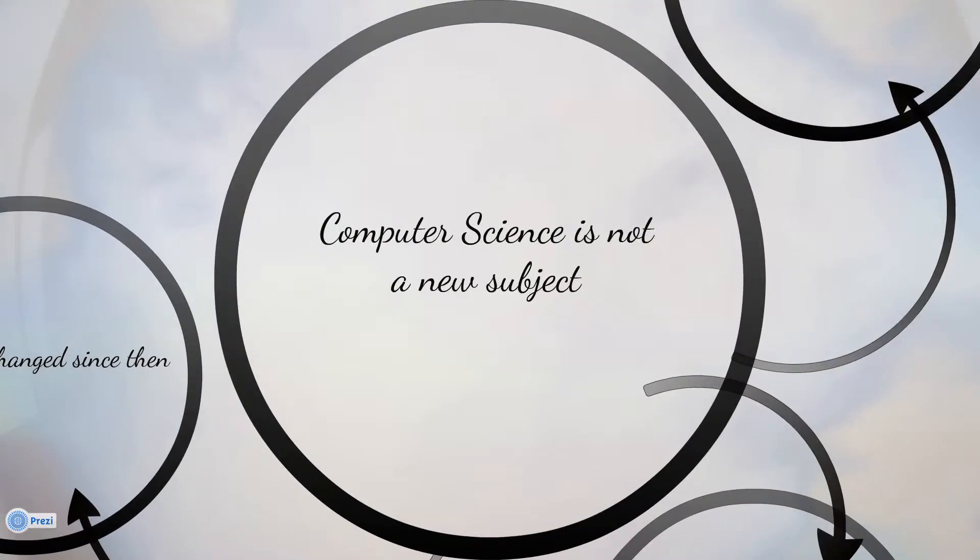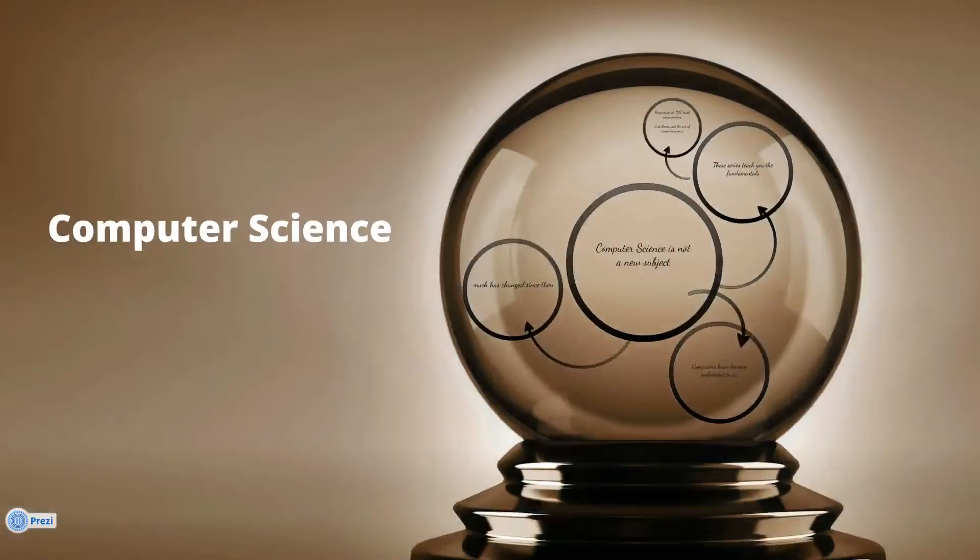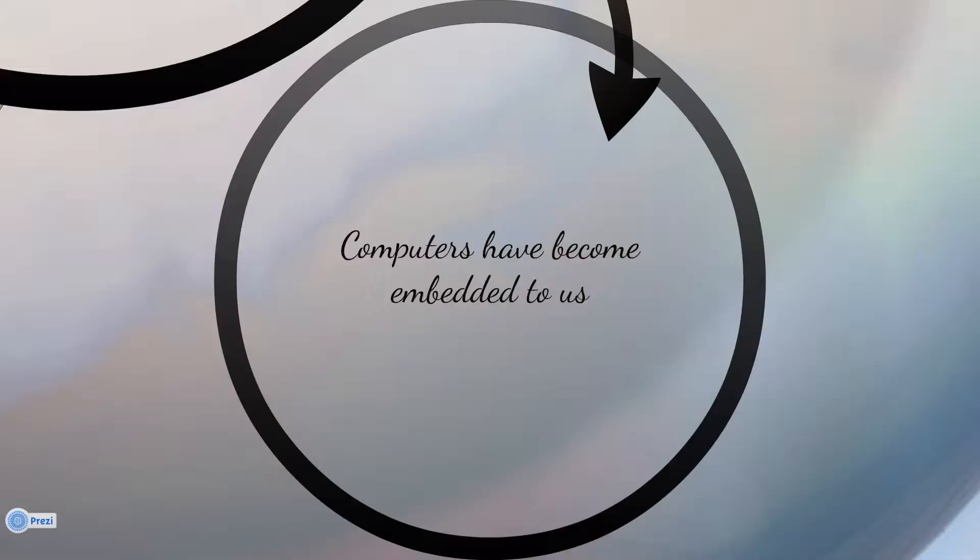So, basically, computers have become embedded to us, okay? It's embedded in our everyday lives, and it's so easy to use that we've stopped thinking about how they actually work. People nowadays, technology is killing humans right now. And people are so stupid, and they don't really know how it works.